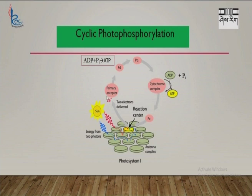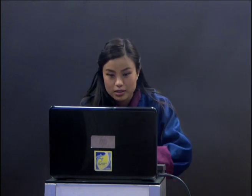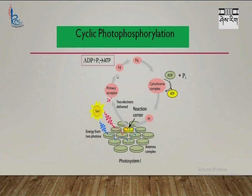Cyclic photophosphorylation operates when only the longer wavelength of light — 700 nanometers — is available. In the absence of short wavelength light, Photosystem II becomes inactive and only Photosystem I functions. ATP is synthesized when the electrons pass through ferredoxin — ADP combines with inorganic phosphate to form ATP. Again, when the electron passes through the cytochrome complex, ADP combines with inorganic phosphate and ATP is synthesized.